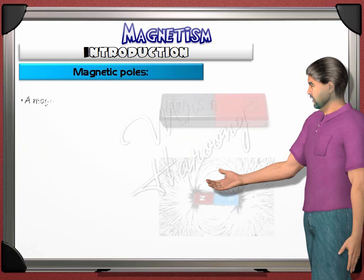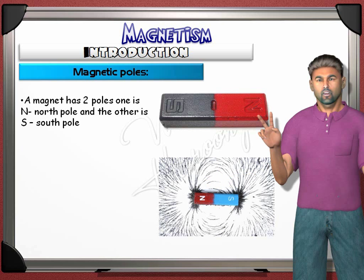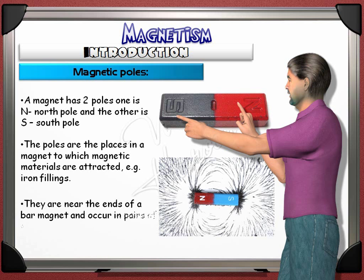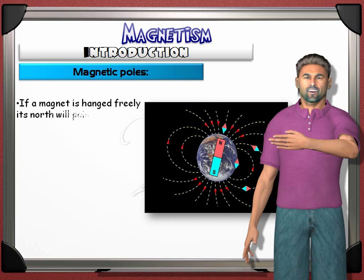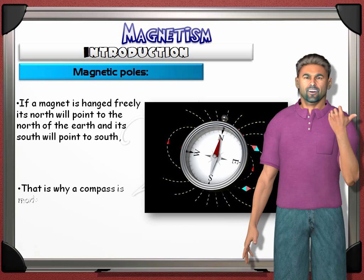The poles are the extreme ends of the magnet. A magnet has two poles: the north pole with the letter N, and the south pole with the letter S. They are the strongest parts of the magnet — the places to which magnetic materials, like iron filings, are attracted. They are near the ends of a bar magnet and occur in pairs of equal strength. If a magnet is hung freely, its north will point to the north of the Earth and its south to the south. That is why a compass is made of a magnetic needle.